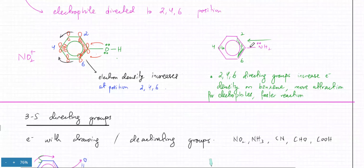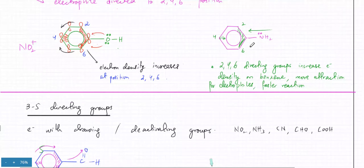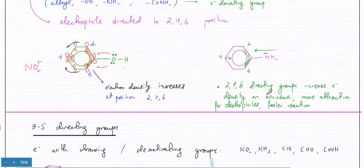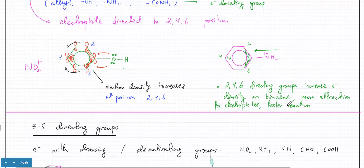NH2 does pretty much the same with arenes. The density on benzene increases because the lone pairs mix with the benzene electron cloud, so the electron cloud density is much higher. The attraction for electrophiles like NO2+ is going to be much greater, which is why the reaction is going to be faster.